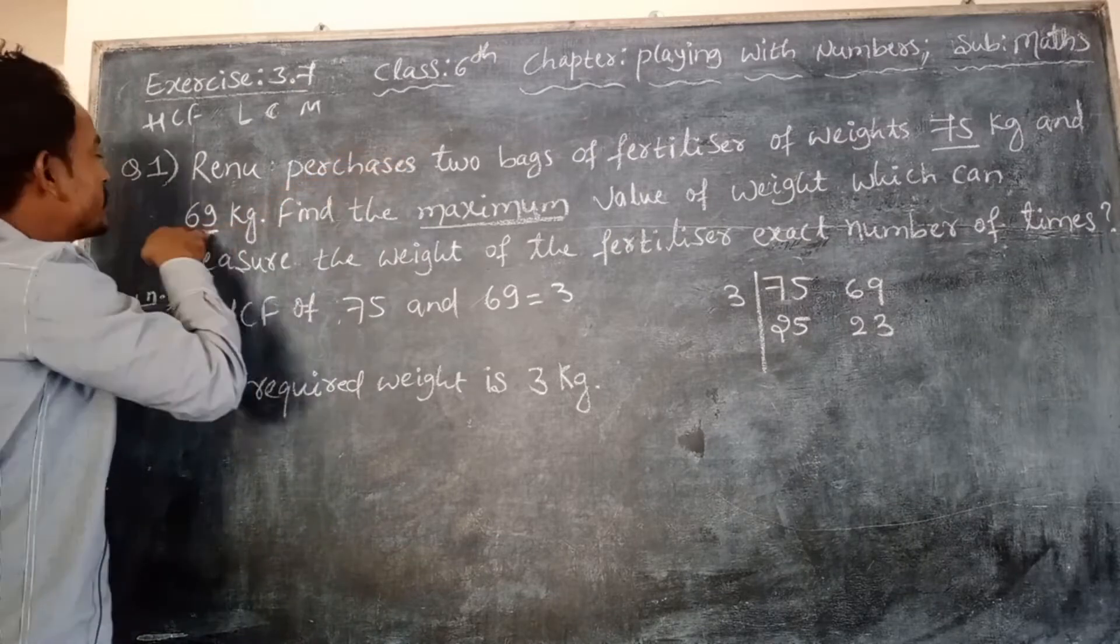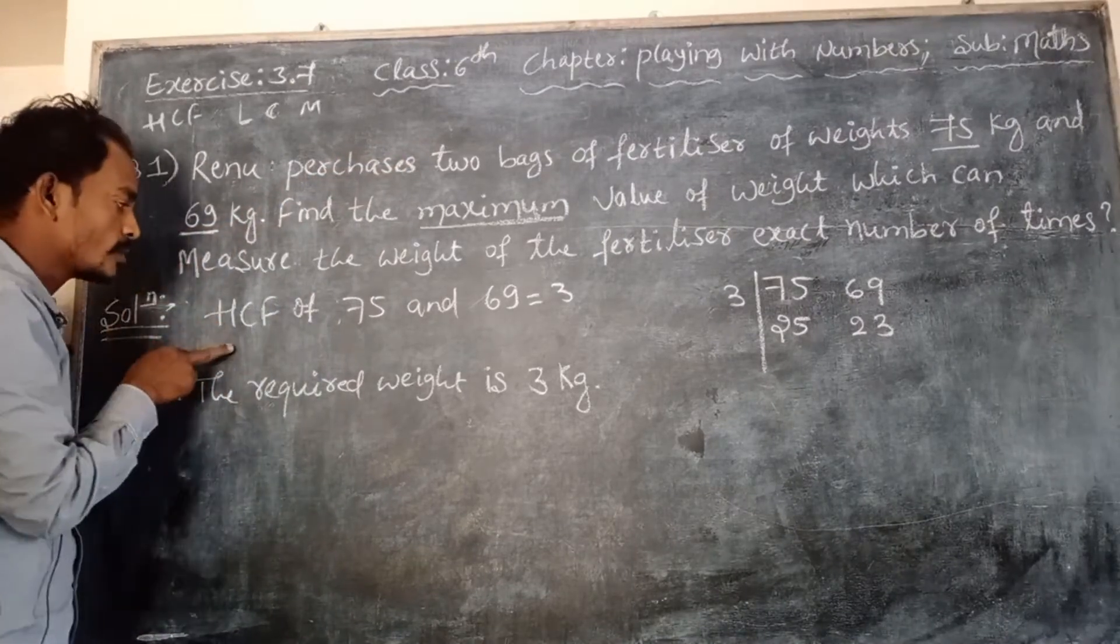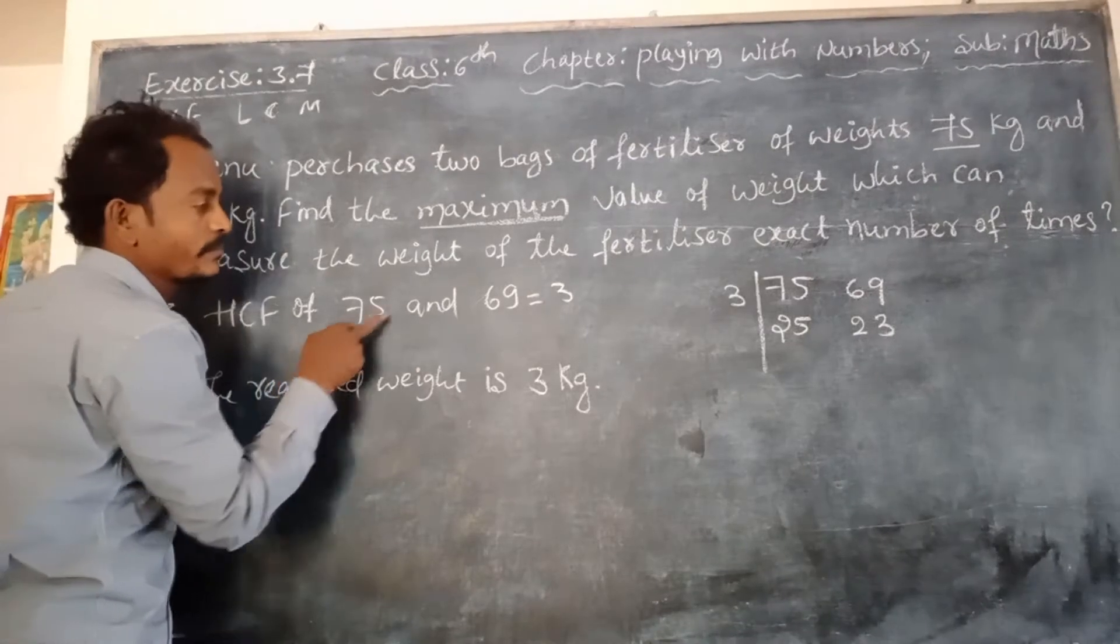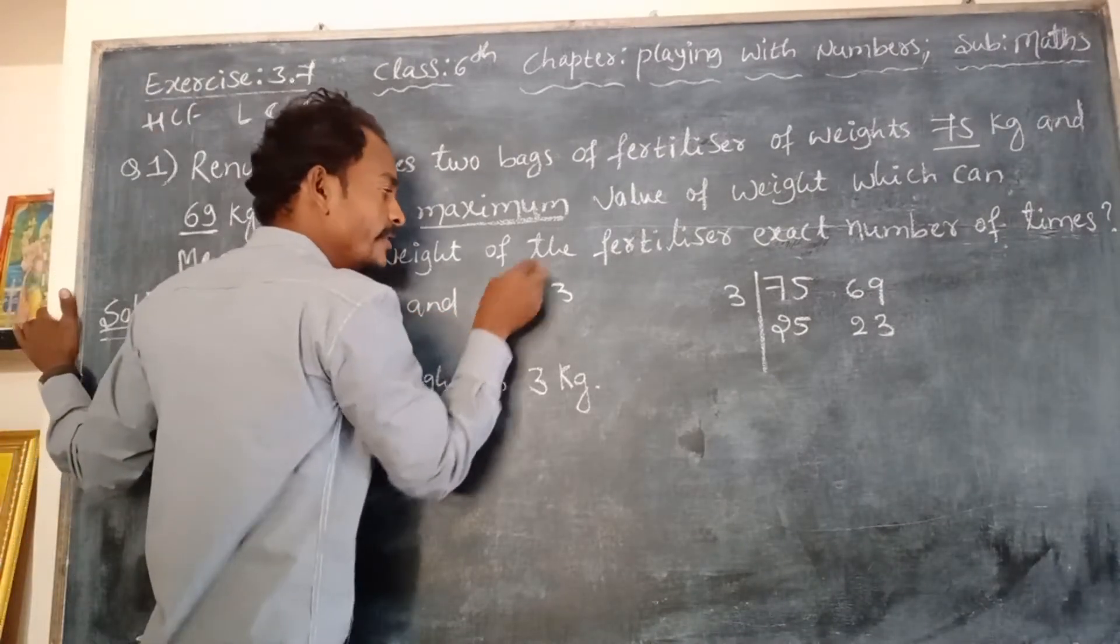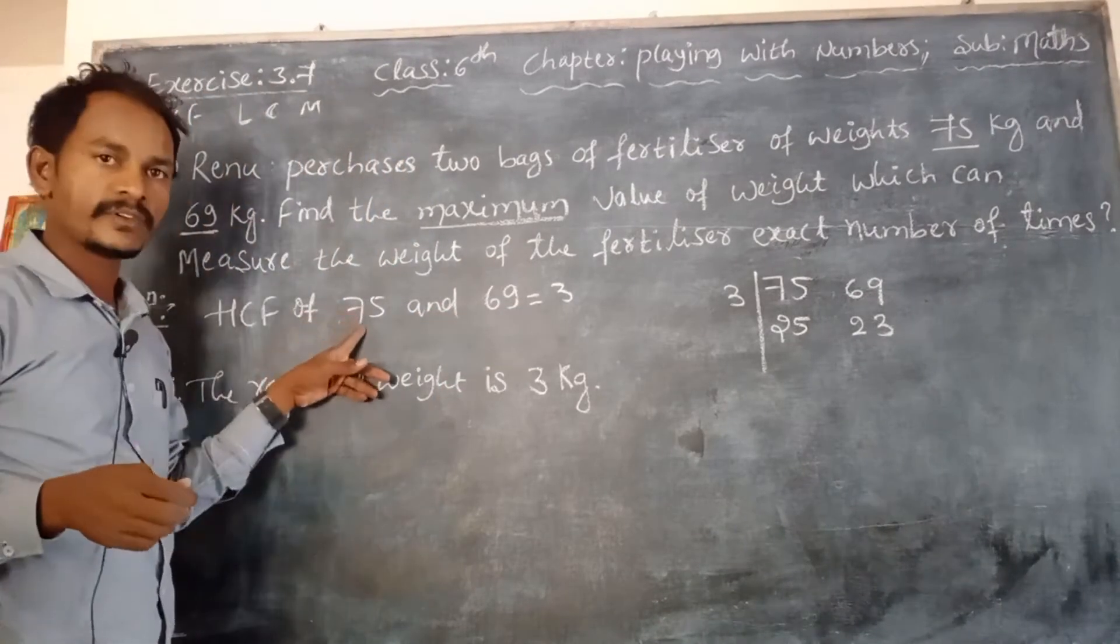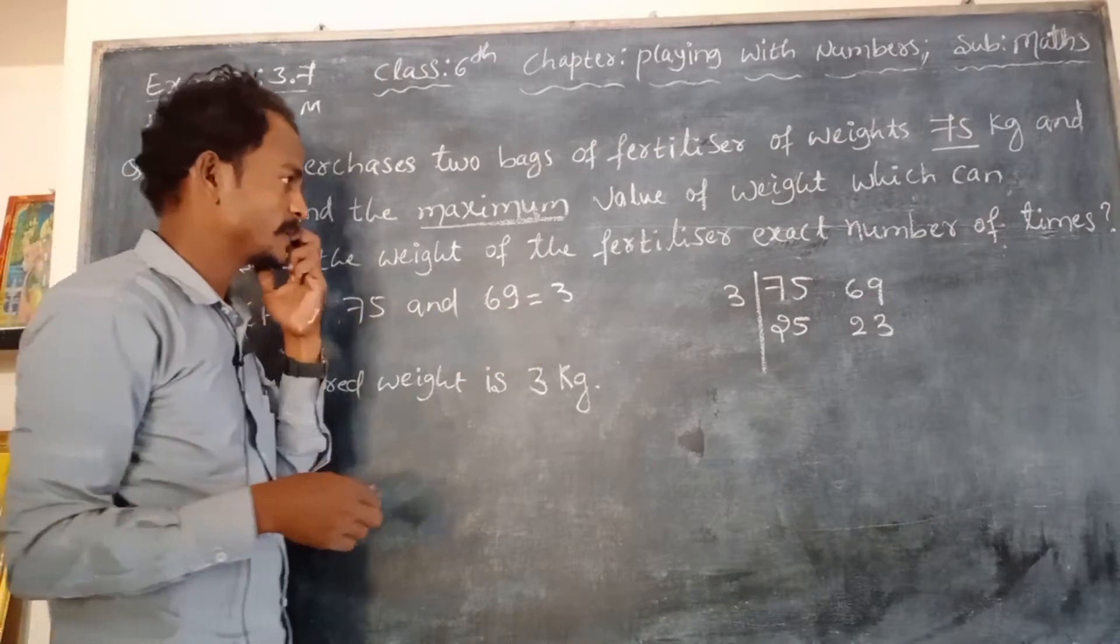So just you have to find the HCF of 75 and 69. Already I wrote on the board: HCF of 75 and 69 is 3. How is it?